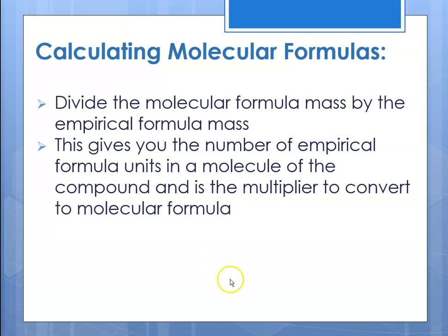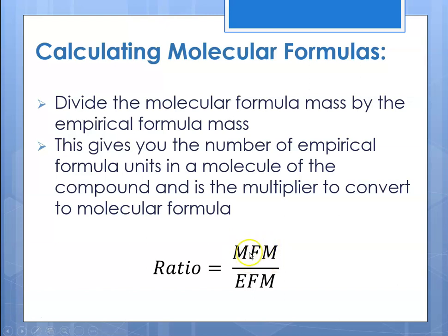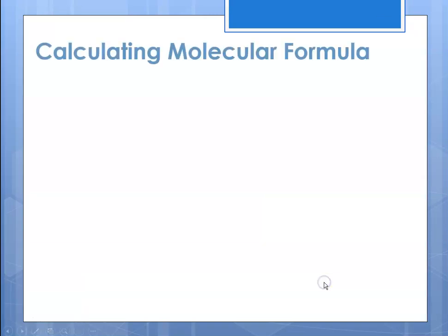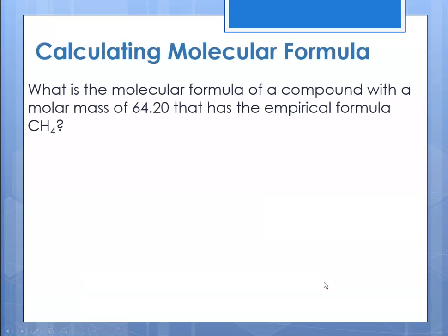To calculate molecular formulas, divide the molecular formula mass (molar mass) by the empirical formula mass to get the ratio — that is, the number of empirical formula units in one molecule of the true compound. You need that ratio to find your multiplier.